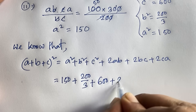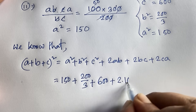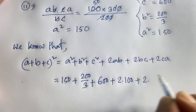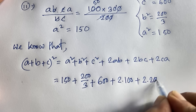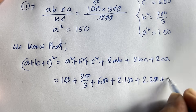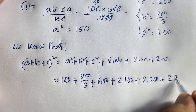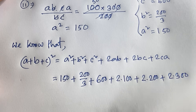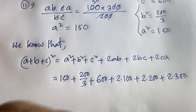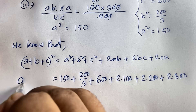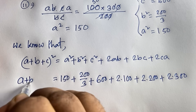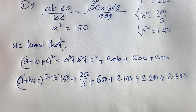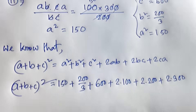And 2 times AB — AB is equal to 100 from our first equation. 2 times BC — BC is equal to 200 from our second equation. And 2 times CA — CA is 300 from our third equation. So we find out A plus B plus C whole square equals 150 plus 200 over 3 plus 600 plus this.